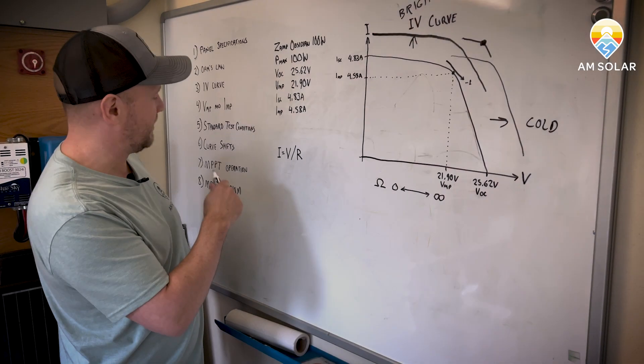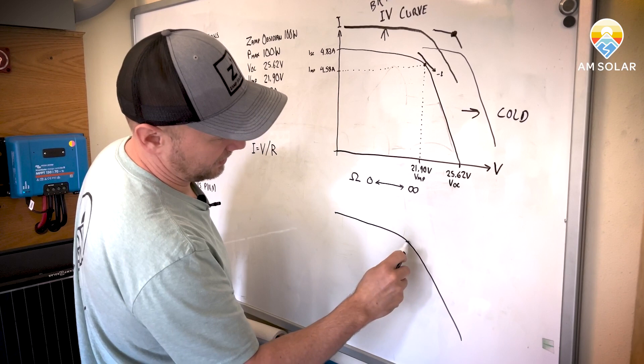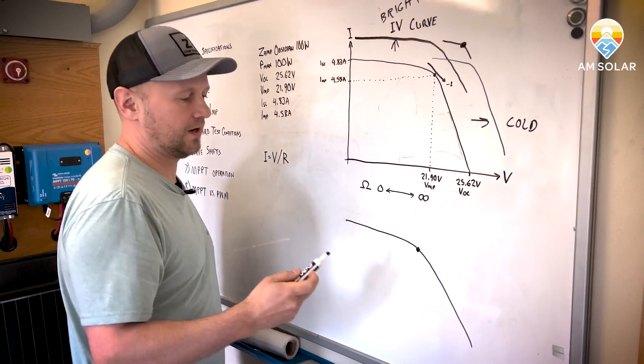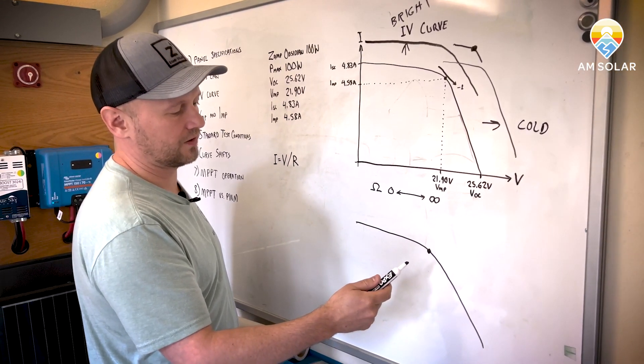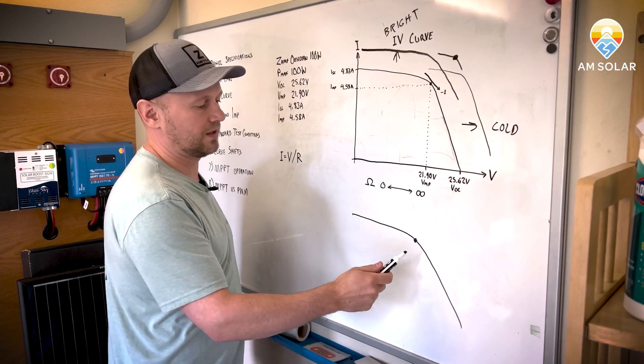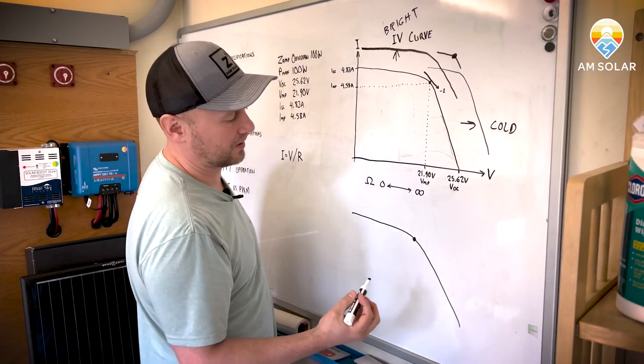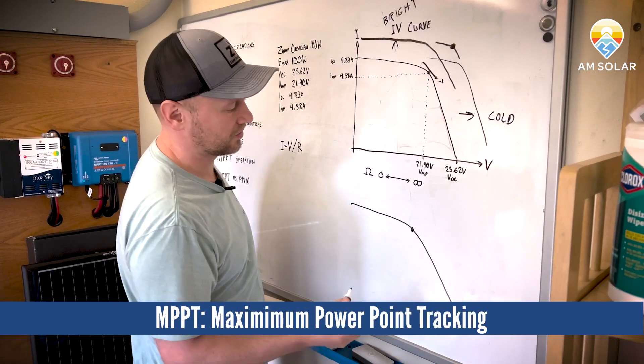So as this curve shifts and the power point shifts, and if you want to maximize the power that you get off the solar panel, you need a charge controller that's going to be able to track these changes to get the maximum power. That's where they come up with maximum power point tracking charge controllers.